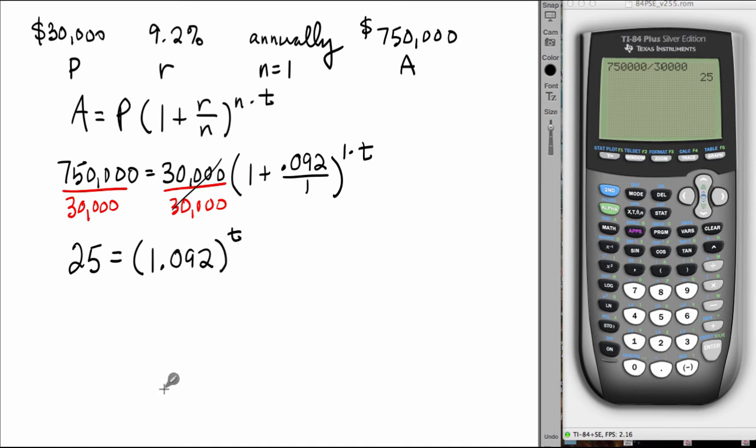Here's where logarithms come in. This is a base one point zero nine two, t is the unknown exponent, and the result is twenty five. We can rewrite this exponential equation as its logarithmic form: log base one point zero nine two of twenty five equals t.